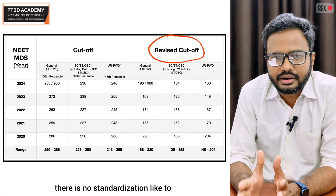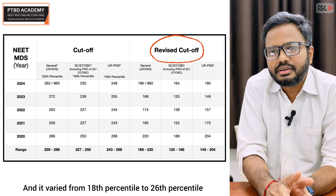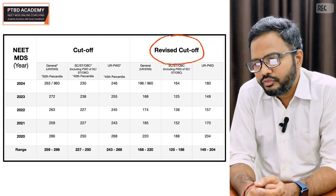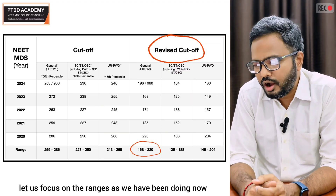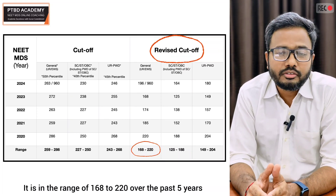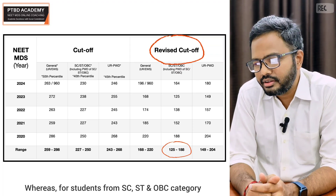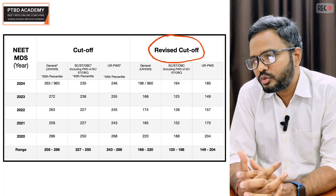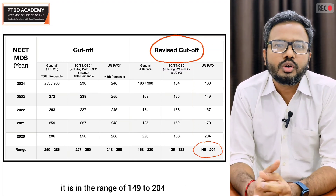Looking at the revised cutoff, as mentioned there is no standardization regarding how much they will reduce the percentile — it varies from the 18th to the 26th percentile over the past five years. For general category students the revised cutoff scores are in the range of around 120. For SC/ST and OBC category students it ranges from 125 to 188, and for unreserved PWD category students it ranges from 149 to 204.